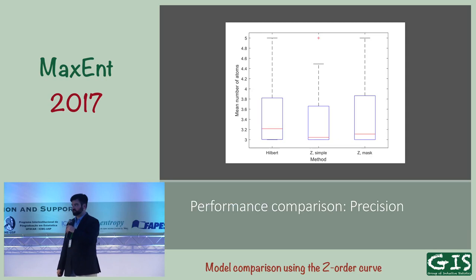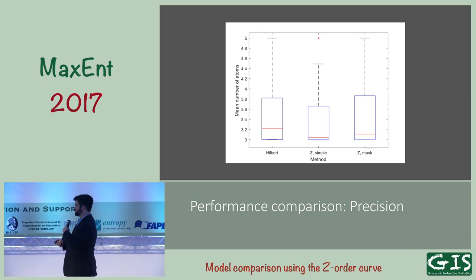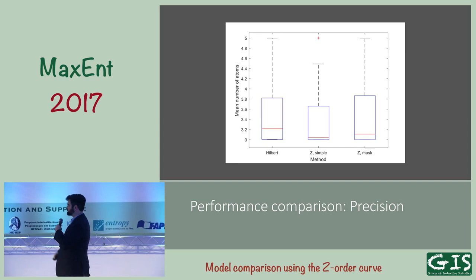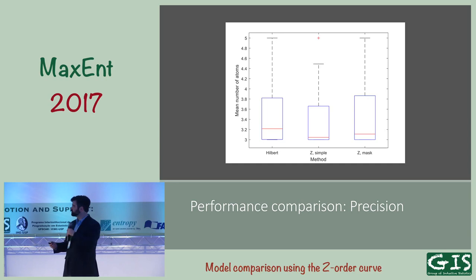The results show the spread of the mean number of atoms that BASIS found over 100 runs for each method. The Hilbert curve found a mean number of atoms of about 3.2, which is close to the true value of 3. Both Z order curve methods also had means very close to that. So we can glean that the Z order curve methods in this particular problem performed no worse than the Hilbert curve method — which is really all we need.